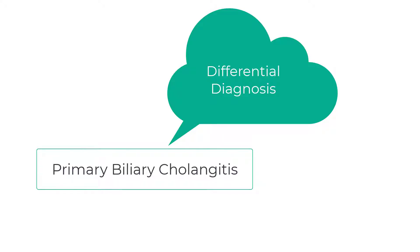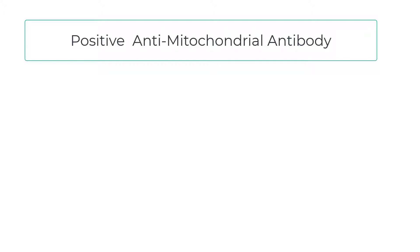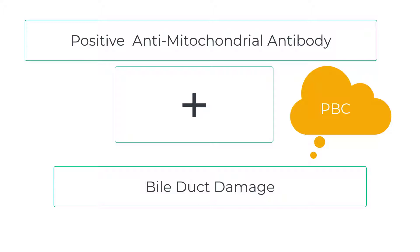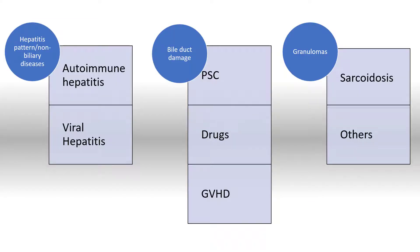Let's talk about the differential diagnosis of primary biliary cholangitis. I'm going to offer a relatively wide differential diagnosis. The reality is that if you have a positive AMA and histologically you can demonstrate bile duct damage, it's very likely — in fact more likely PBC than any other potential diagnosis. But there is a legitimate differential diagnosis, and I like to divide them into three groups.